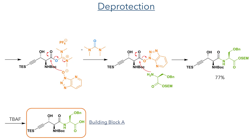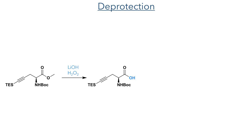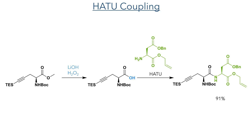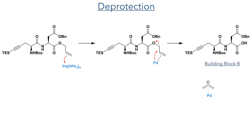To produce building block B, the same alkynylated methyl ester produced using the decarboxylative cross coupling was hydrolyzed under the same conditions as before and coupled with another amino acid using HATU. This compound had an allyl-protected carboxylic acid and this was deprotected using tetrakis(triphenylphosphine)palladium. This coordinates to the double bond and activates it, allowing for the elimination of the carboxylate which is protonated upon workup to produce building block B. The allyl cation generated by this reaction is scavenged by N-methylmorpholine.